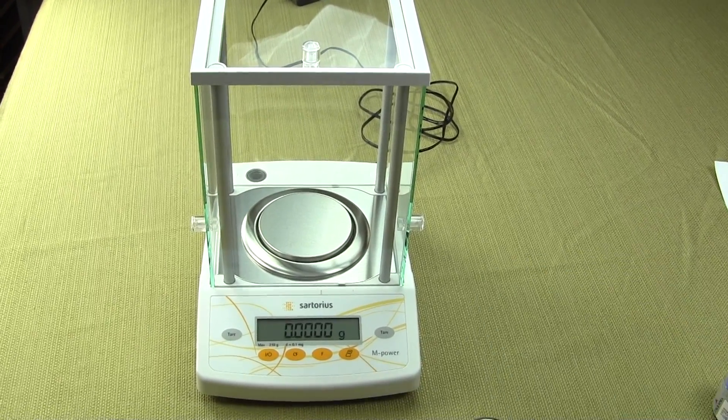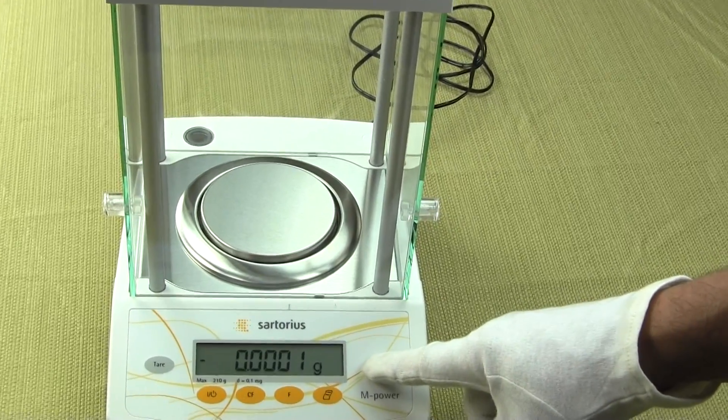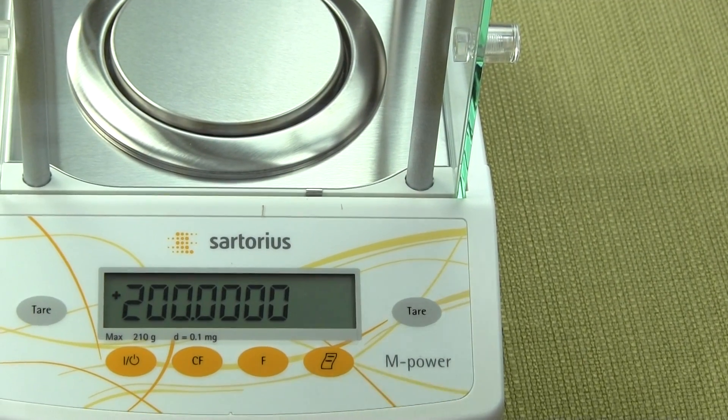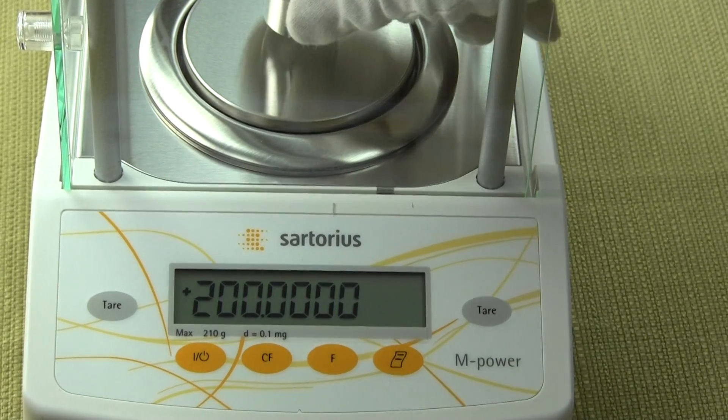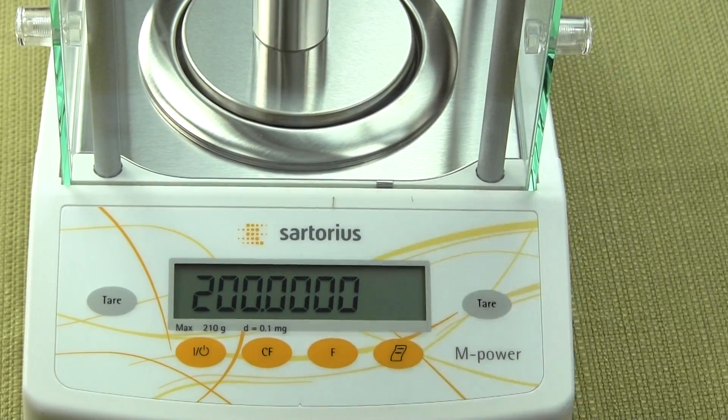You want to press the tare button. Simply press and hold the tare button down, and the balance will flash the required calibration weight. This is the AZ214 and it requires 200 grams. So you place the 200 grams on the center of the platform.